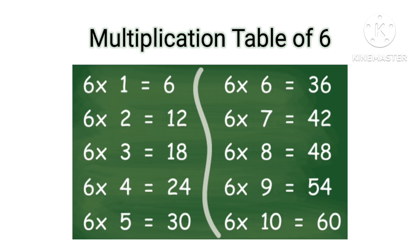Table of 6: 6×1=6, 6×2=12, 6×3=18, 6×4=24, 6×5=30, 6×6=36, 6×7=42, 6×8=48, 6×9=54, 6×10=60.